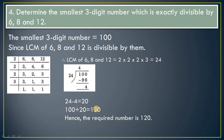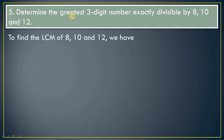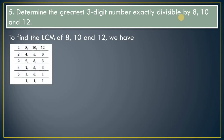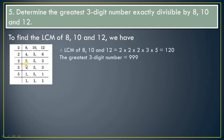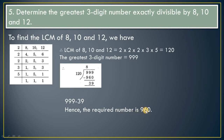Question 5: Greatest three-digit number exactly divisible by 8, 10, and 12. Even though 'greatest' appears, apply LCM because the number must be divisible by all three — it will be larger. LCM = 120. The greatest three-digit number is 999. Divide 999 by 120 — remainder is 39. Subtract 39 from 999, giving 960. Hence the required greatest three-digit number is 960.